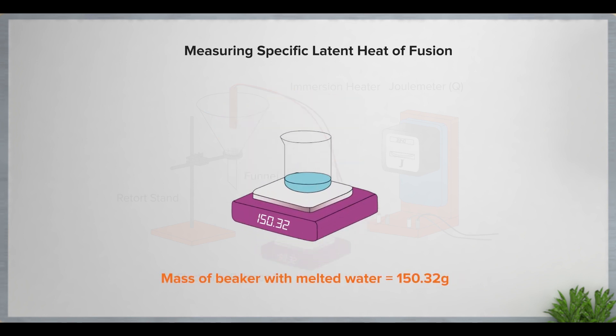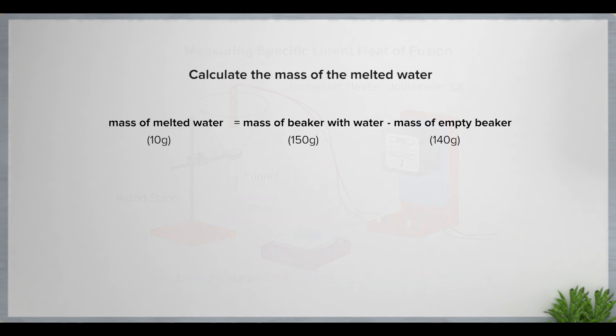Measure the mass of the beaker with the melted water using the electronic balance. To calculate the mass of the melted water, simply take the mass of the beaker with the water minus the mass of the empty beaker.